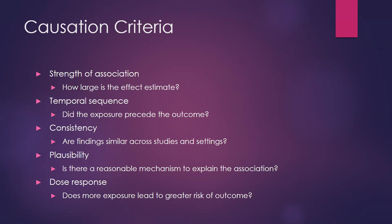Temporal sequence is another criterion: are we sure the exposure came before the outcome? If it didn't, there's no causal relationship. We must make sure the time order is correct. For example, looking at opioid pain medicines and fall risk in older adults — if we do a cross-sectional study it probably won't give good evidence for temporal sequence, because someone might be prescribed an opioid because they fell. We need to confirm they were taking opioids and then fell, not that they fell and were then prescribed opioids.